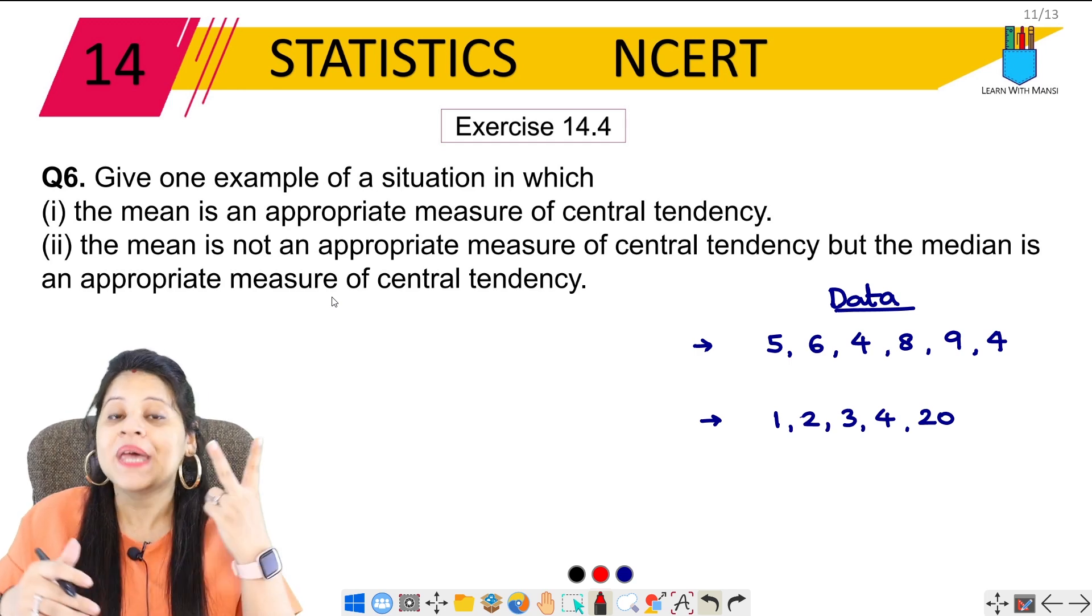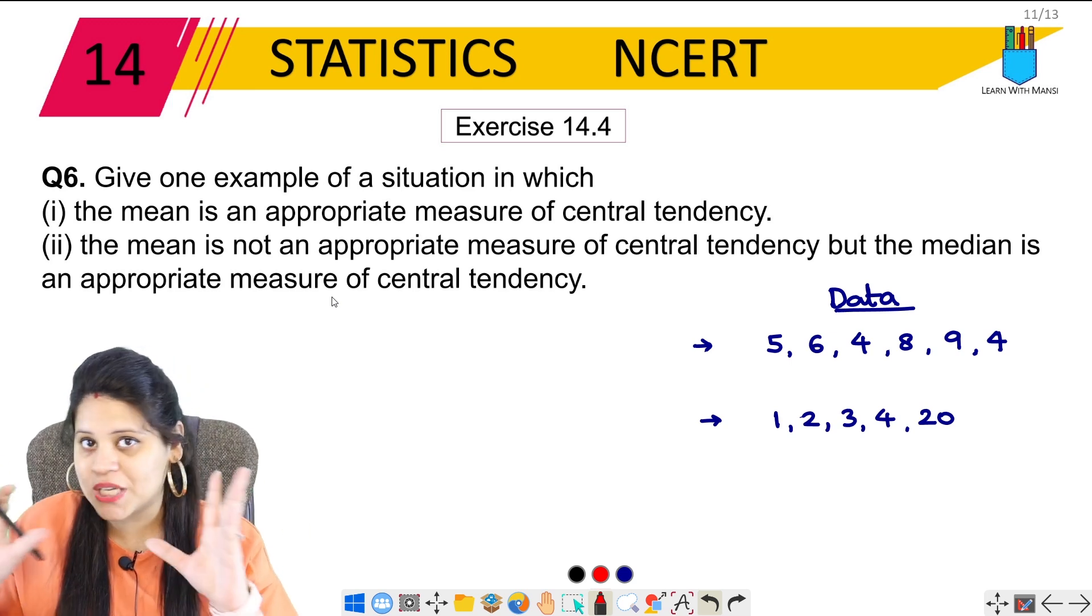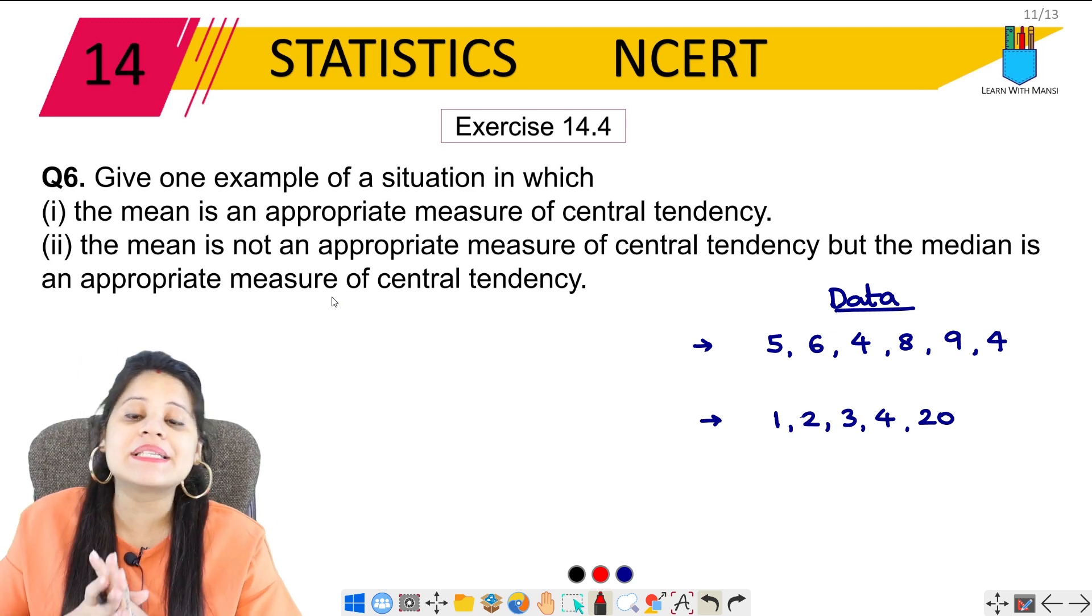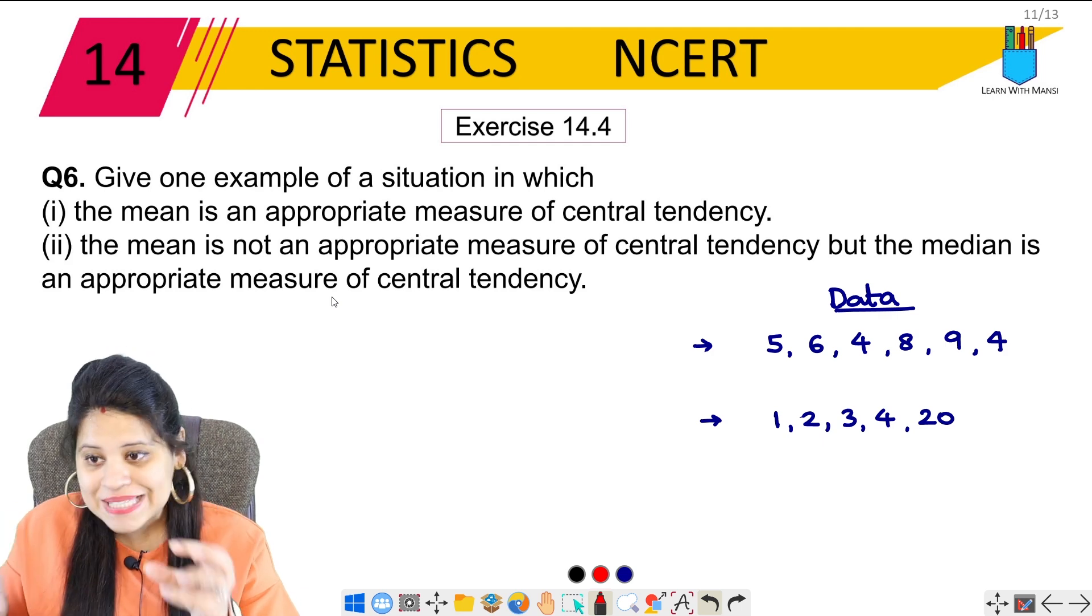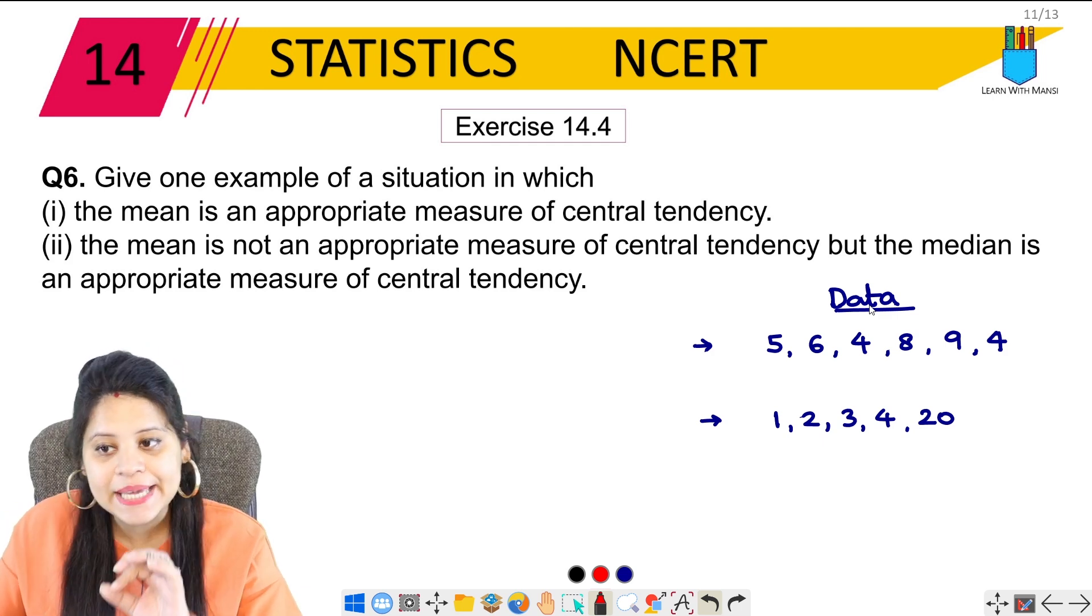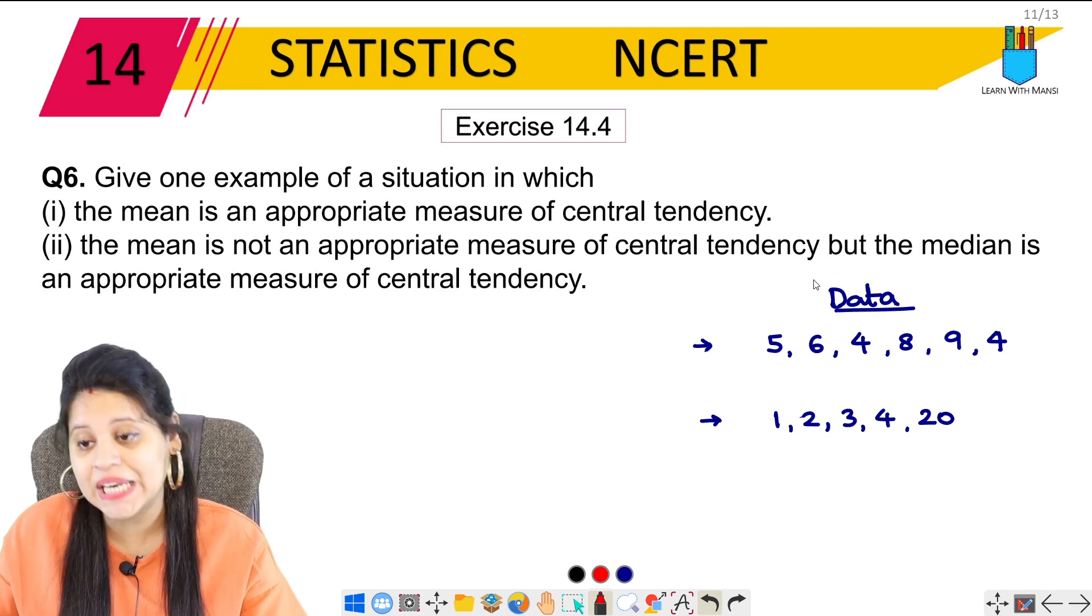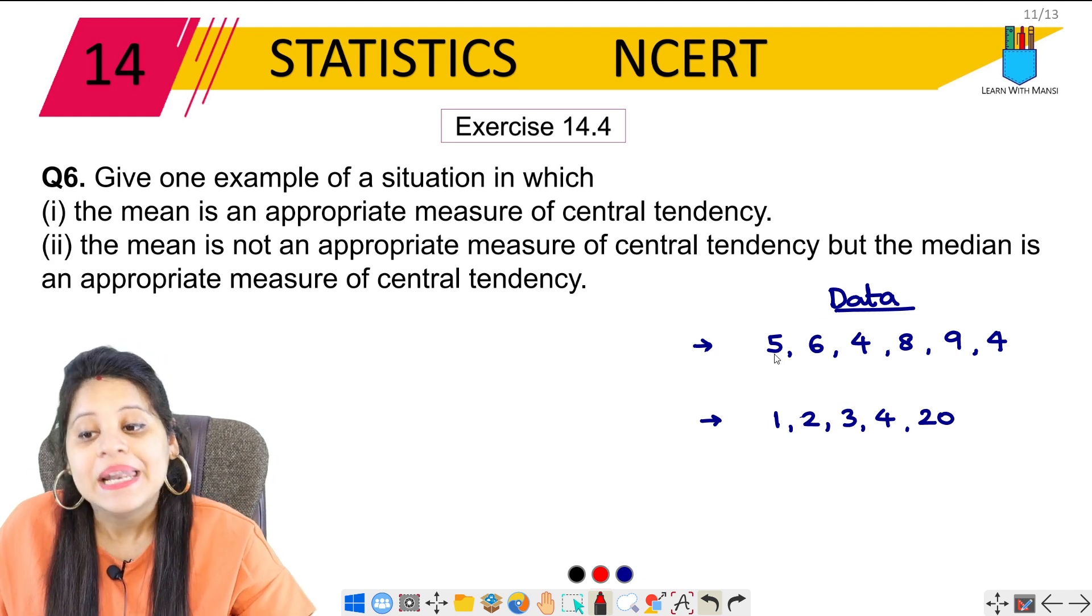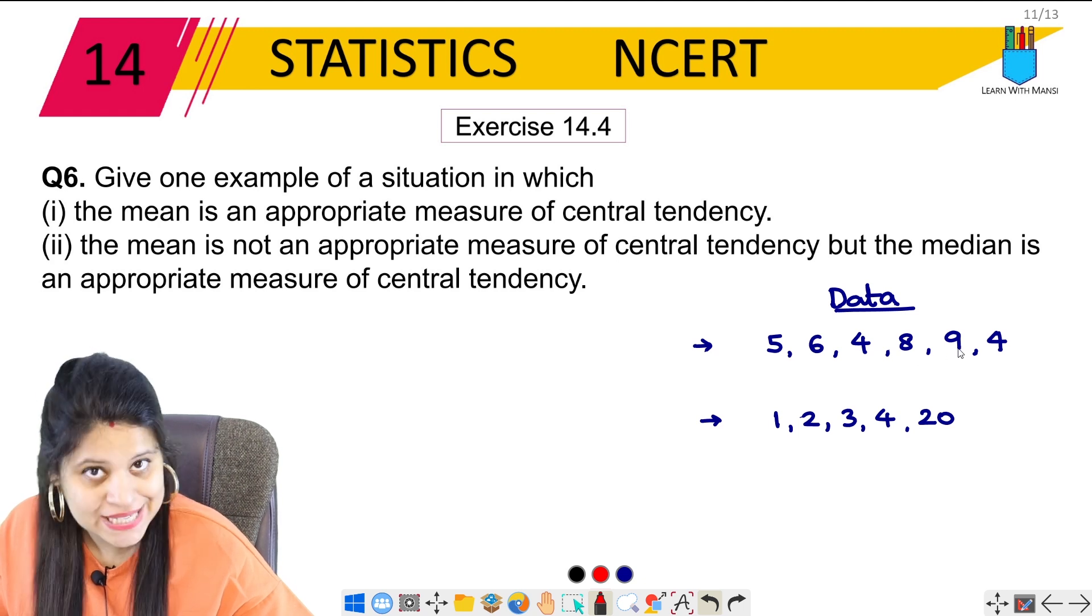Here we will give two examples. We will show that the mean will be the best. We need to understand the concept of this. I have two types of data, random numbers basically. Let's suppose these are marks of children.